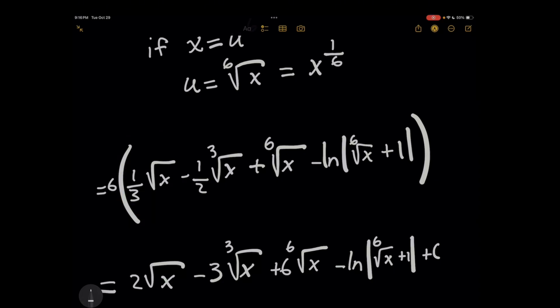I'm using the square root notation instead of x to the 1/2 here. Minus 1/2 x to the 1/3, which is the same as the cubic root, plus x to the 1/6, which is the same as the 6th root of x, and so on.